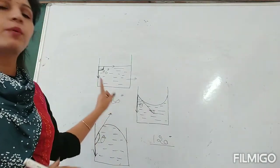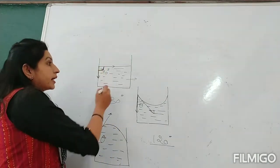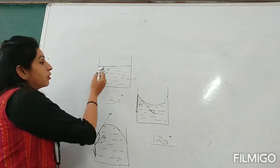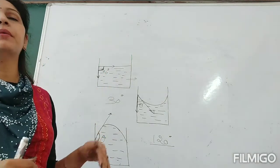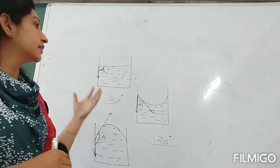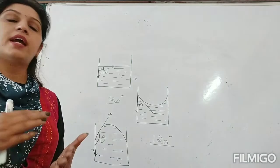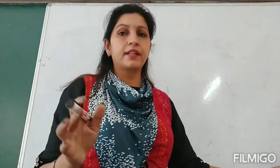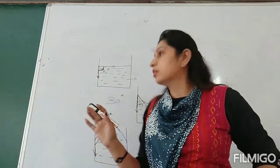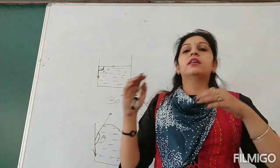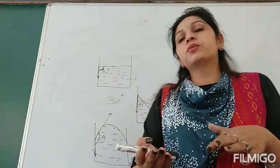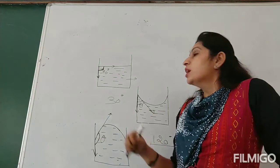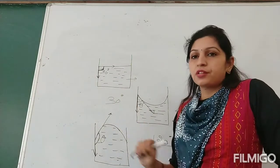To summarize: the angle of contact is the angle between the tangent drawn to the liquid surface and the tangent drawn to the solid surface lying inside the liquid. It can be acute, obtuse, or 90 degrees. The angle of contact depends upon certain factors — for example, the nature of the solid and liquid in contact. Water can make both acute and obtuse angle of contact depending on the nature of the container surface.